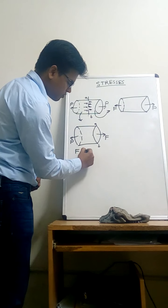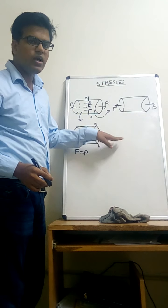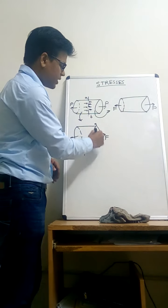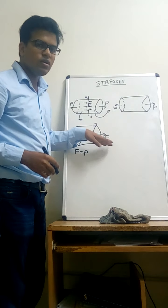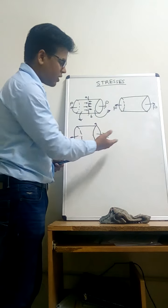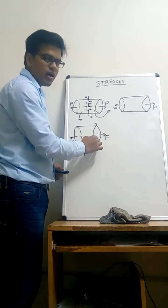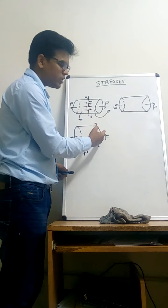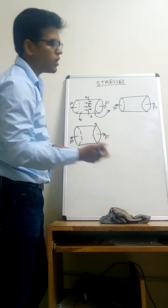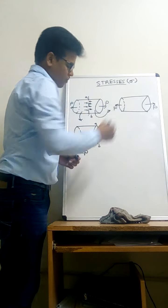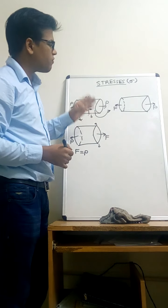The intensity of the internal resisting force on the area on which it is acting is called stress. In other words, stress is defined as the internal resisting force developed in the body per unit area on application of any load. Stresses are generally denoted by sigma, and stresses act only at a point in the body.